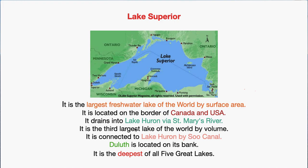Lake Huron and Lake Superior are connected by the St. Mary River. If water flows from Lake Superior to Lake Huron, it goes through the St. Mary River. According to volume, this is one of the notable rankings. One important point here is that Duluth is a city located on the coast of Lake Superior.